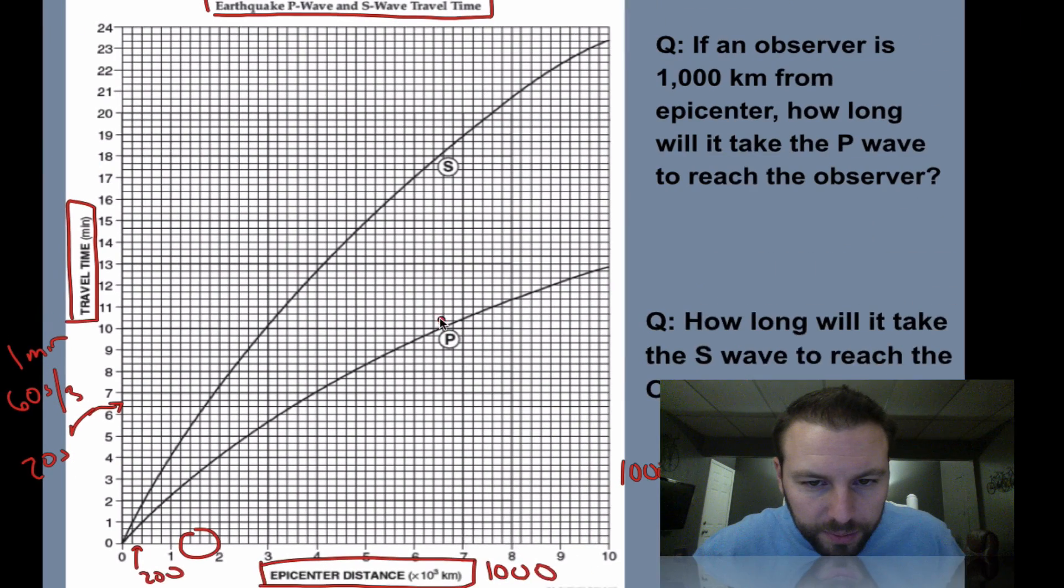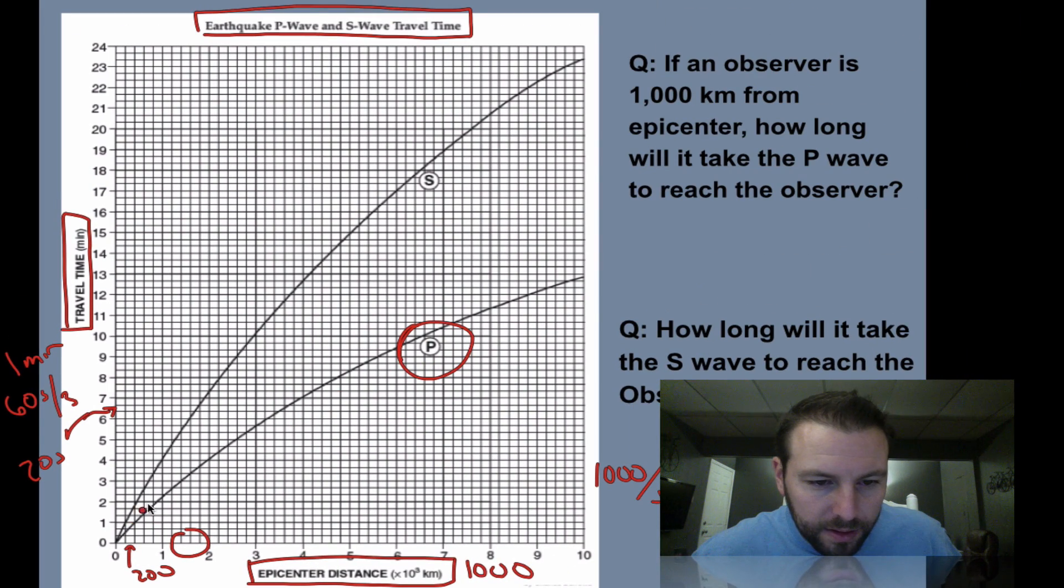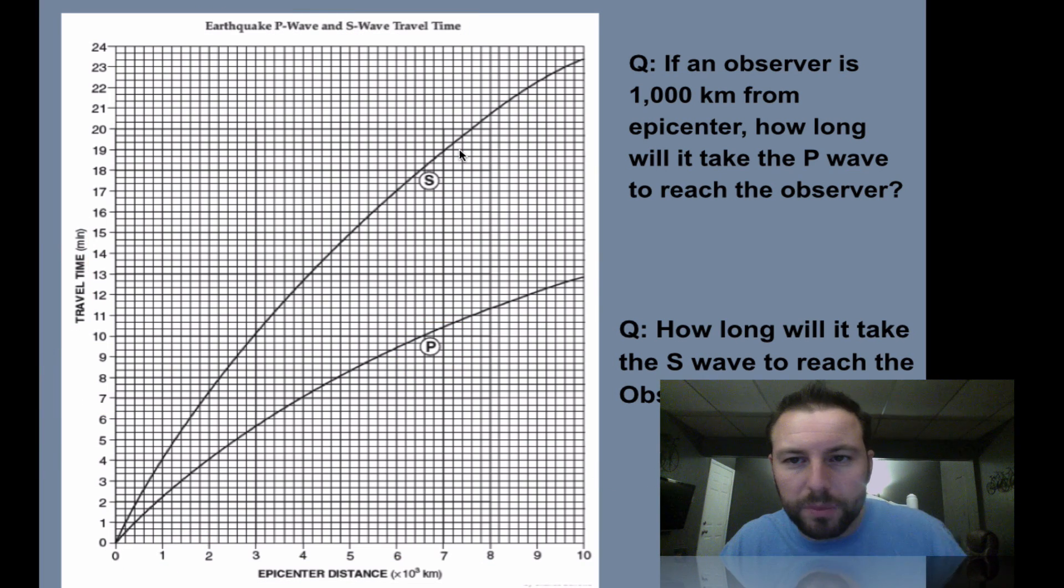Also looking, notice the P wave right here. It's a little bit lower on the curve because it's faster. Remember, primary waves are faster versus our secondary waves. Now that we've looked at the chart, let's try to work out some problems here.